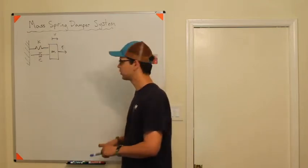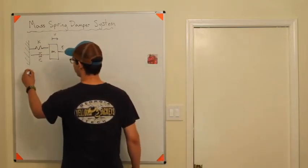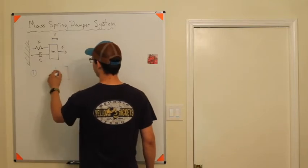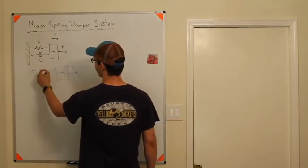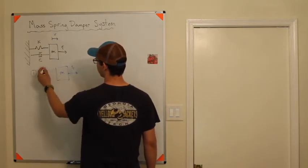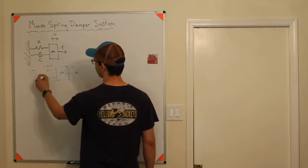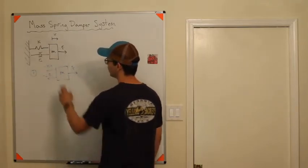Let's do a free body diagram first. This is M. You've got a force input here. If you move it to the right you're gonna have a spring force here and a damping force here. This is a damper and this is a spring.